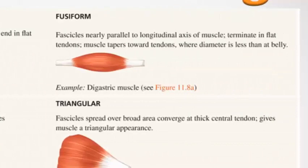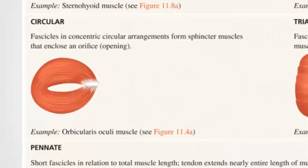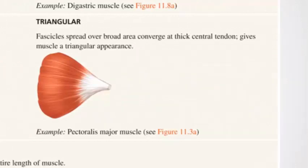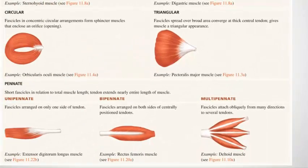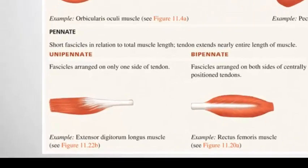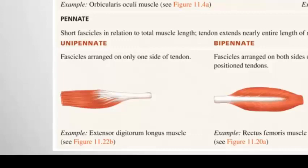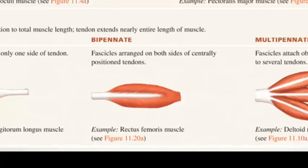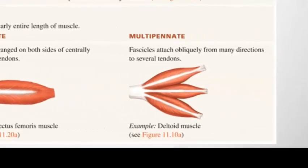Parallel arrangements have fascicles parallel to the longitudinal axis, terminating in flat tendons, offering a lot of flexibility. Fusiform arrangements are nearly parallel but taper toward the tendon end and are also quite flexible. Circular arrangements form concentric rings and often form sphincter muscles. Triangular arrangements spread over a broad area converging to a smaller point. Pennate arrangements include unipennate (one side of tendon), bipennate (both sides), and multipennate (obliquely from many directions).